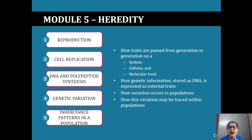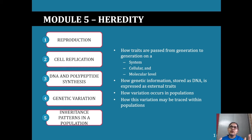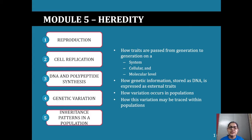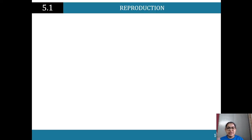Firstly, we'll be looking at how traits are passed from generation to generation on a cellular and molecular level. We're looking at those specific cellular processes and then zooming out to look at how that's showing up and affecting the whole ecosystem. Then we'll be looking at how genetic information stored as DNA is expressed in external traits.